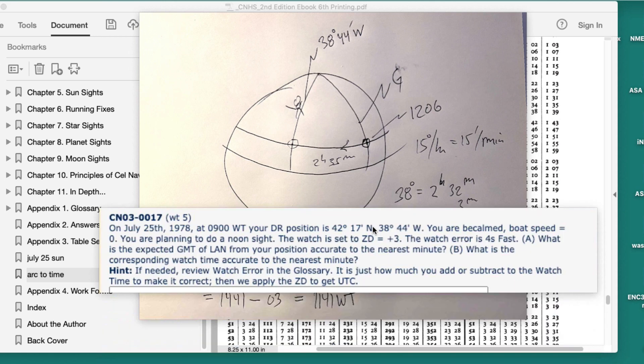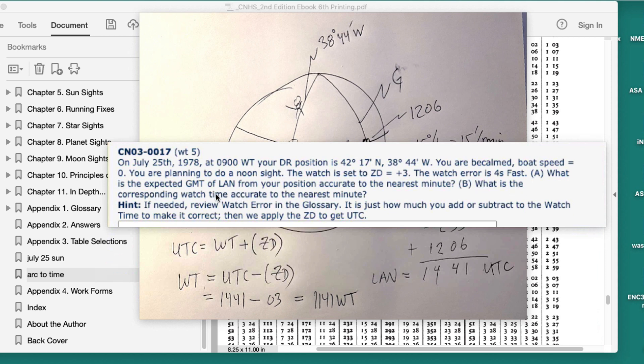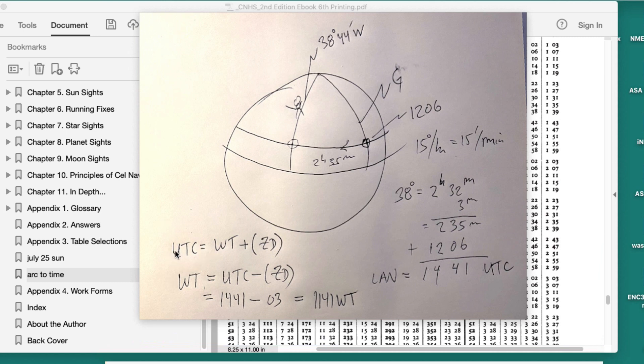Then the second part of that question was part B: what is the corresponding watch time accurate to the minute? So let's go back to the definition. UTC is equal to the watch time plus a zone description. I put this in brackets because this zone description can have a minus sign. In the western longitudes, it's always plus. In the eastern longitudes, it's minus. So I just switch sides on the equation here, and I move this to the other side, and then I get watch time equals UTC minus zone description. Our zone description is plus 3, given in the problem. So it's 14:41 minus 3 is 11:41.